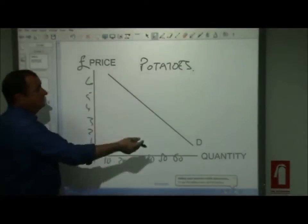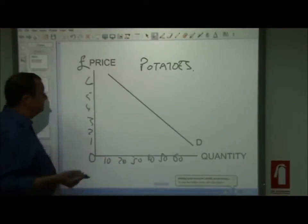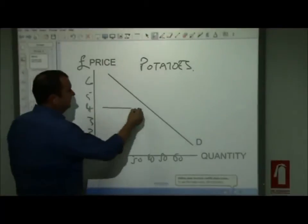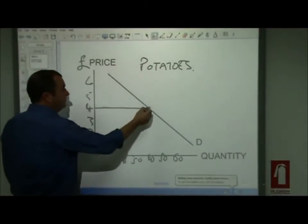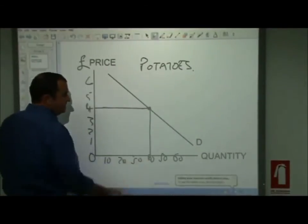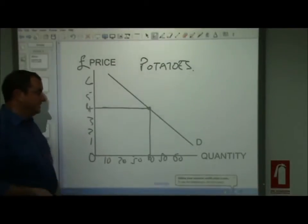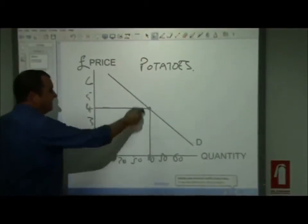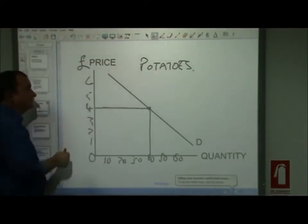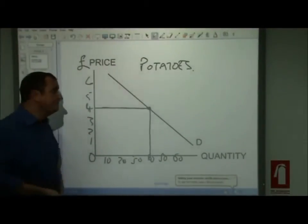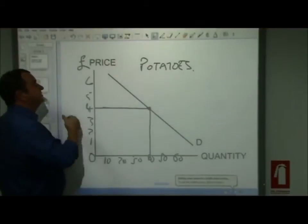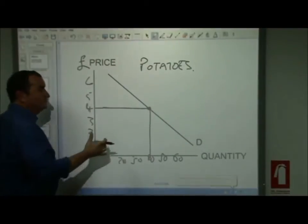This data on the demand curve tells me, for example, that if the price were to be four pounds, then this point on the demand curve tells me that the quantity demanded will be 40 — 40 bags of potatoes will be bought when the price is four. I know this from this point on the demand curve. And I can also see that if the price was higher, less would be bought.